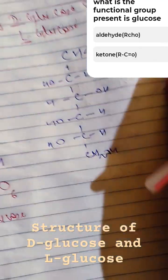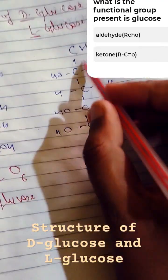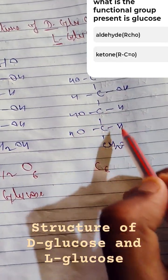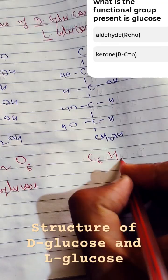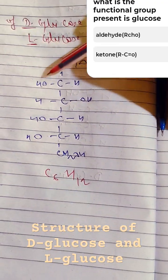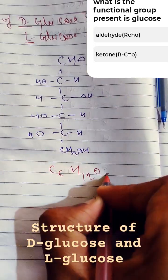Let's count the carbon atoms first: 1, 2, 3, 4, 5, 6. C6. H: 1, 2, 3, 4, 5, 6, 7, 8, 9, 10, 11, 12. H is 12. Oxygen: 1, 2, 3, 4, 5, 6. Oxygen is also 6.